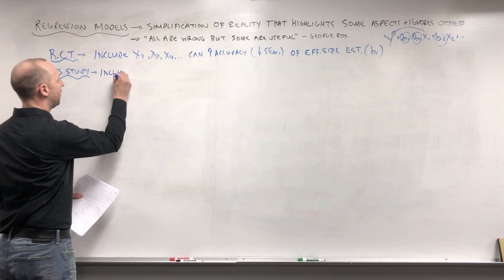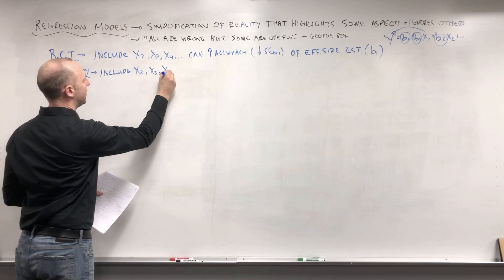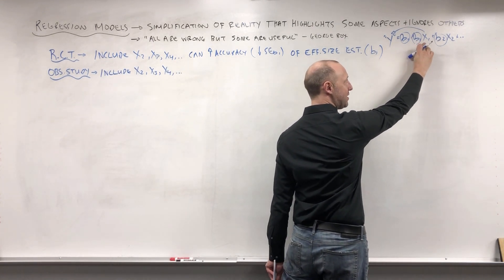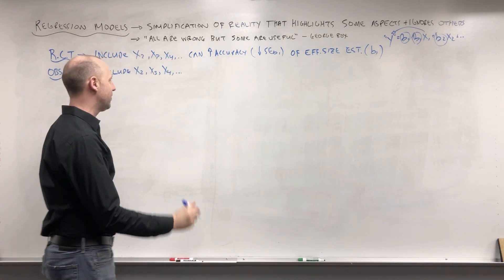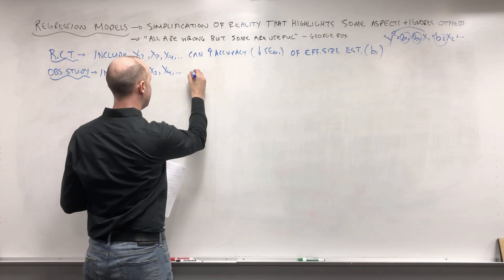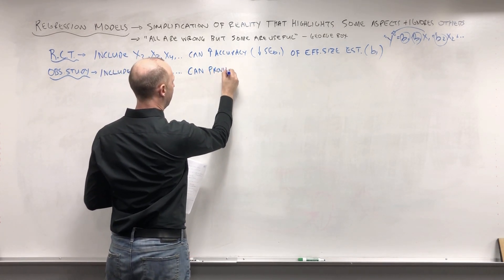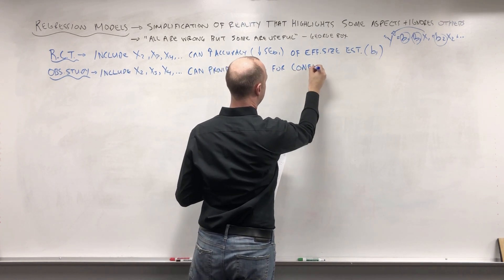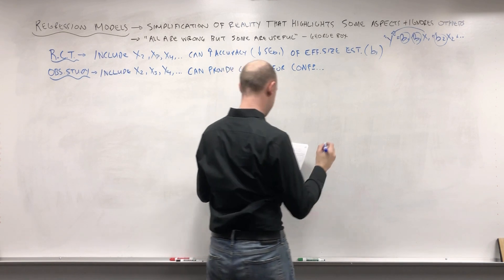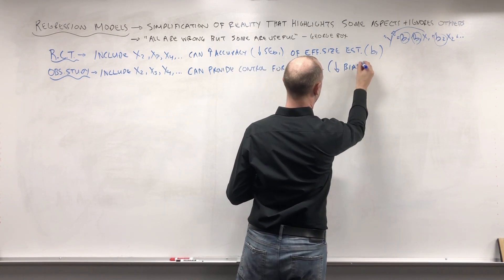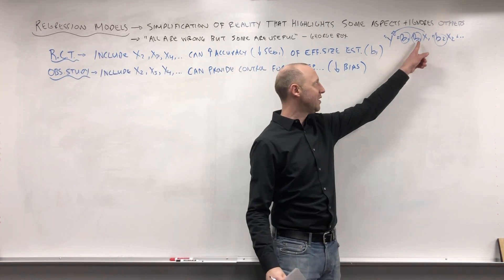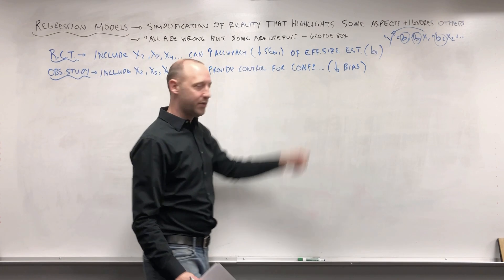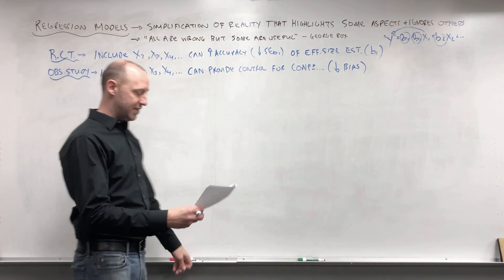In observational studies, we might also include other variables x2, x3, x4. The estimated effect b1 — the estimated effect of x1 on the outcome — might be biased due to confounding or other factors. Including these additional variables can provide control for confounding and decrease the bias. Remember, in an observational study b1 is always going to be somewhat biased; we can try to decrease that bias by adjusting for confounders and other factors we'll discuss throughout the course.